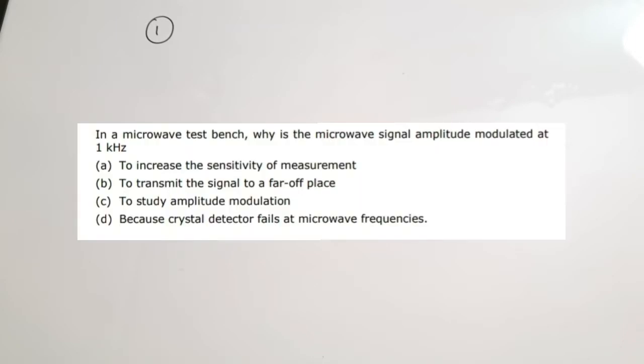In this video, you can find questions from medium level to tough level. The first question is a comparatively simple theory question. In a microwave test bench, why is the microwave signal amplitude modulated at 1 kilohertz? So when a microwave test bench is set up, we use a microwave signal with amplitude modulation at 1 kilohertz. What is the reason?